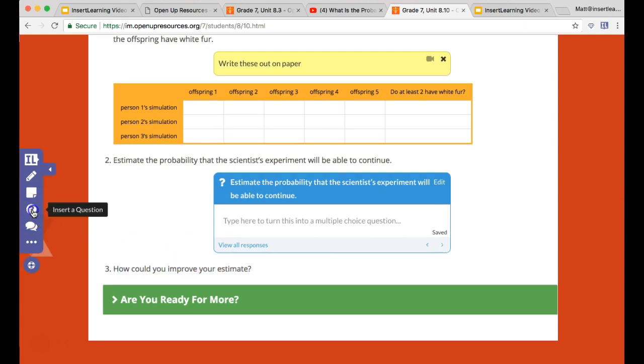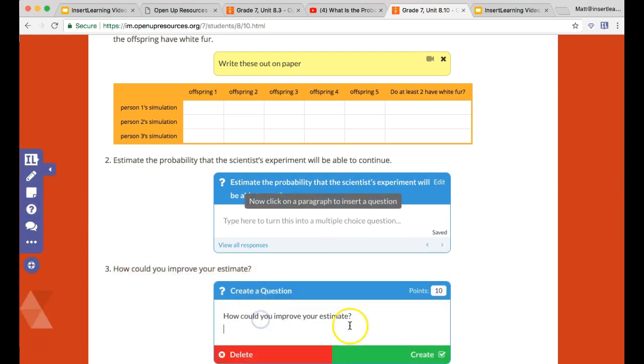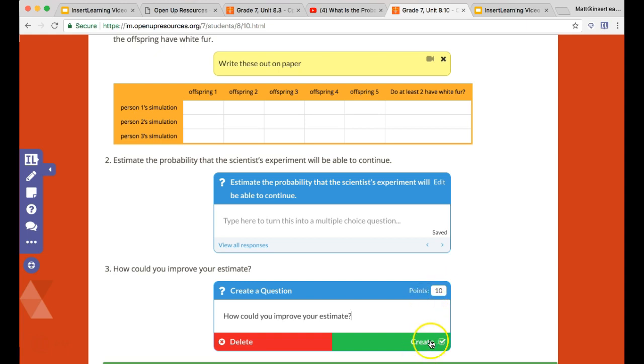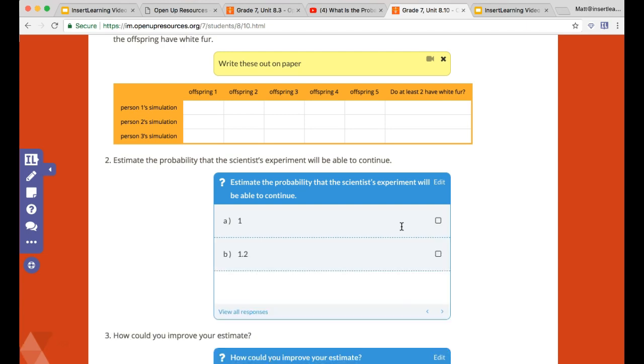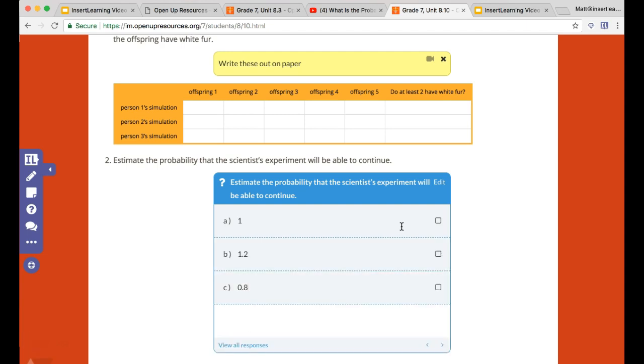And you can always edit the number of points whenever you want to. Now if we also wanted to, we could have a multiple choice question here. So we could have like some different estimates. I want to give a range: what's the probability? This is going to be a free response, but I can turn this into a multiple choice. Let's say the probability is going to be one, one point two, zero point eight, or zero point five, and let's say it was going to be this one.